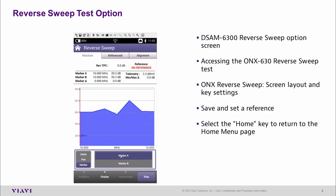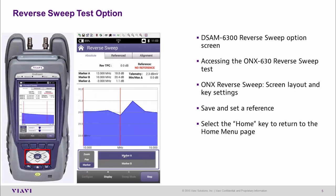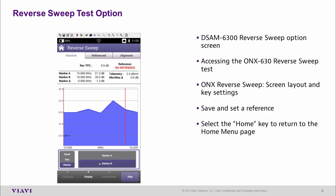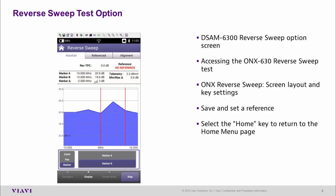If I highlight marker A and then use my cursor keys, I can move to one side of this incident. I then select marker B and do the same to the other side of the incident. Now we can see at the top that marker A is showing a frequency of 15 MHz at about 20 dBs, and marker B is 13 MHz at around 18 dBs — a difference of around 2 dBs between the two.